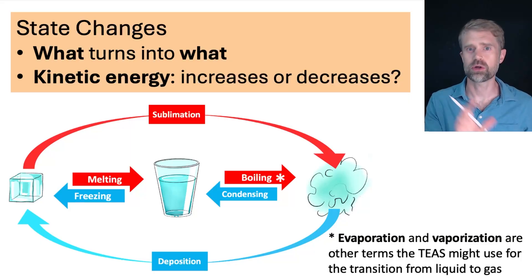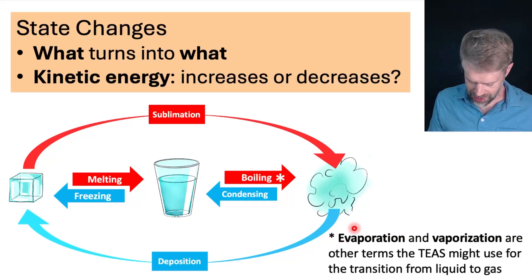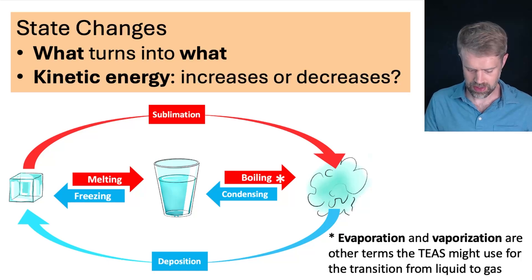You also want to know all of the state changes. First, you want to know what turns into what. There are six state changes on this diagram right here. Make sure that you learn them all. There are a few other terms that are also important. Okay. The TEAS might talk about evaporation or vaporization. These are other terms for the change from liquid to gas. The TEAS might talk about boiling. They might talk about evaporation or vaporization. In all cases, you're going from liquid to gas. And for all these state changes, you also want to know what happens to the kinetic energy of the particles. Does it increase or does it decrease? Okay. Make sure that you learn this information. You can screenshot this diagram right here to study from.